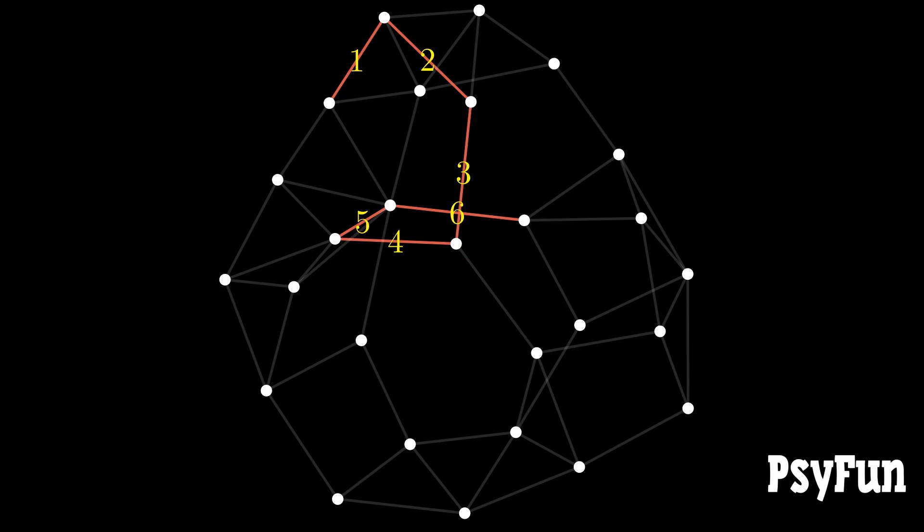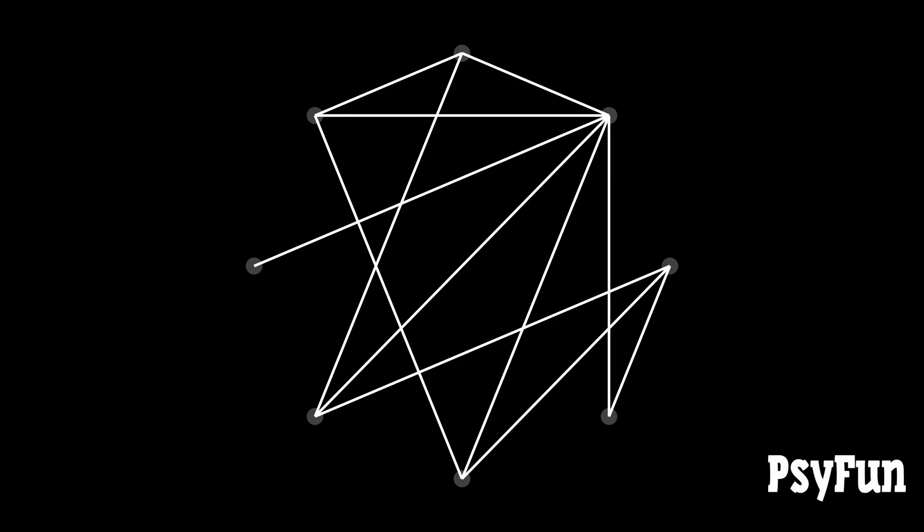This is also known as the small world property of our world social network, and the same applies to other networks. Even the United States president can be reached via a path of only six connections or edges. The surprise comes from the fact that this short path exists between every two people in the world with an average length of only six.